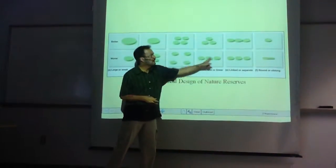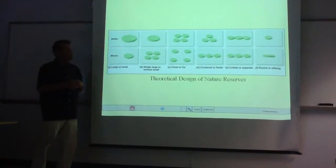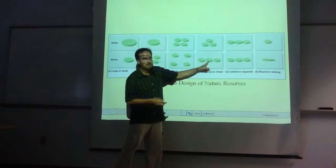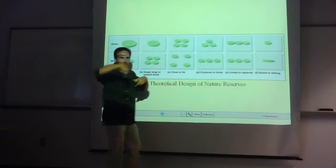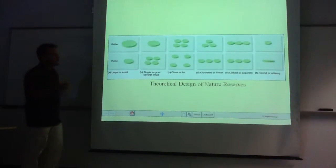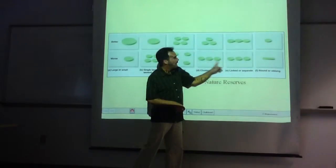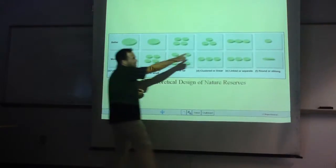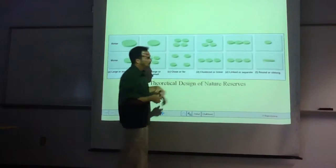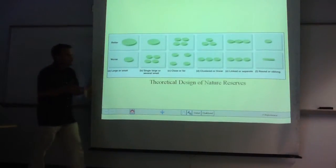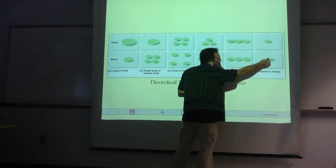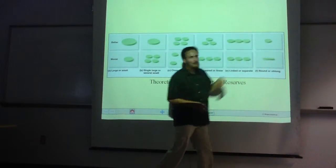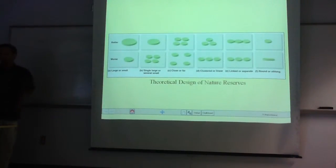If you're stuck with having three little ones, you'd want them more in a cluster than in a line, because in a cluster each one is closer to the others. If you're forced to have them in a line, it's better to have them with a little connection rather than completely separate — individuals can migrate through these little corridors. Shape is also important: you don't want something oblong because those individuals are not very far from the edge, whereas a rounder shape has more center habitat away from the edge.